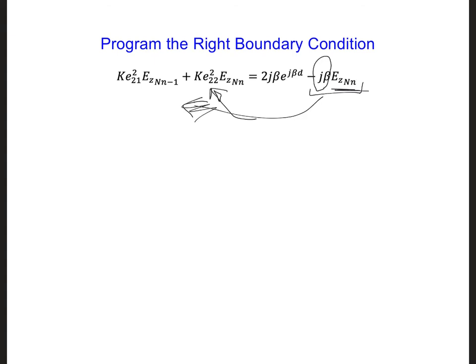So we want to incorporate it into the k matrix at the very last node, n, n in our k matrix. In other words, we'll have k(n,n) is equal to what's already there after we put in the ke coefficients.